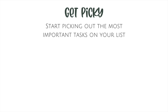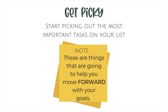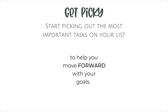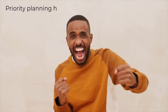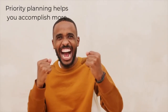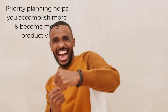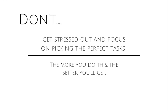Step two is to get picky. This is where we start picking out the most important tasks on our list. We're not setting priorities yet, but we are starting to choose tasks that are going to help you move forward with your goals — not the laundry, not the dishes. When you start to priority-plan, it helps you accomplish more and be more productive. Don't stress about picking the perfect tasks; the more you do this, the better and faster you'll get.